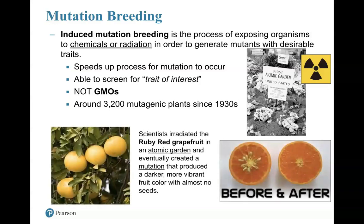Some examples you may have been exposed to using mutation breeding are the ruby red grapefruit. The ruby red grapefruit came from what we call an atomic garden — the gardens we use mutation breeding for. They are controlled and regulated in the United States. Basically, it's a mutant that was created: scientists exposed it to UV light, it mutated, and they decided they liked the darker, more vibrant fruit with barely any seeds. They decided that ruby red grapefruit is a lot more profitable — people are going to buy it more.